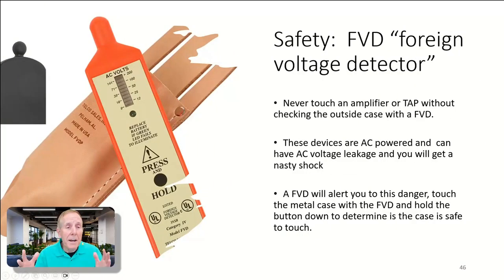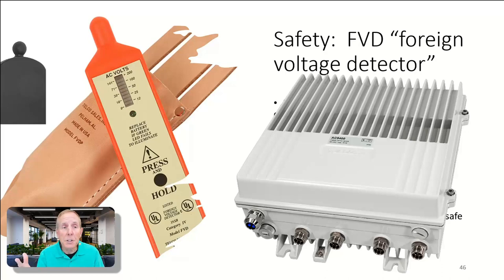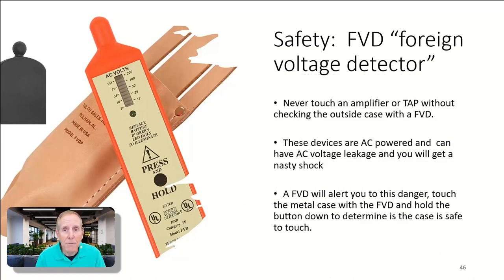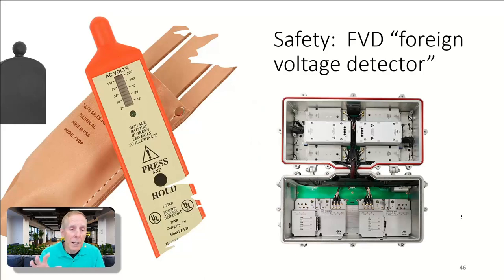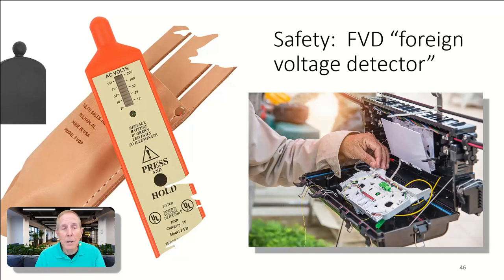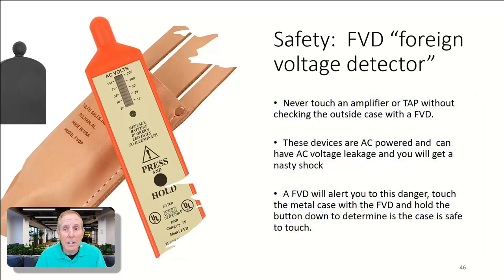Never, never touch a piece of equipment in the cable system without first using this device. This is called a FVD, a foreign voltage detector. It protects you should something go wrong with the power supply inside the amplifier or splitter. You don't ever want to touch, open up a cover, and touch a piece of equipment out in the cable plant system without using an FVD. This will help you determine is there any potential voltage on the casing of those devices before you mess with anything. If you don't, you can get a really nasty shock. Make sure you have an FVD.